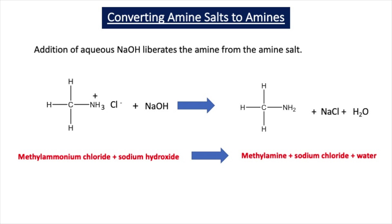The last thing we'll look at before the practice questions is how to convert the amine salt back to the original amine. To do this, we add aqueous sodium hydroxide or aqueous potassium hydroxide, and the addition of aqueous alkali will liberate the amine from the amine salt. So here methylammonium chloride reacts with sodium hydroxide, NaOH, to make methylamine, sodium chloride, and water.